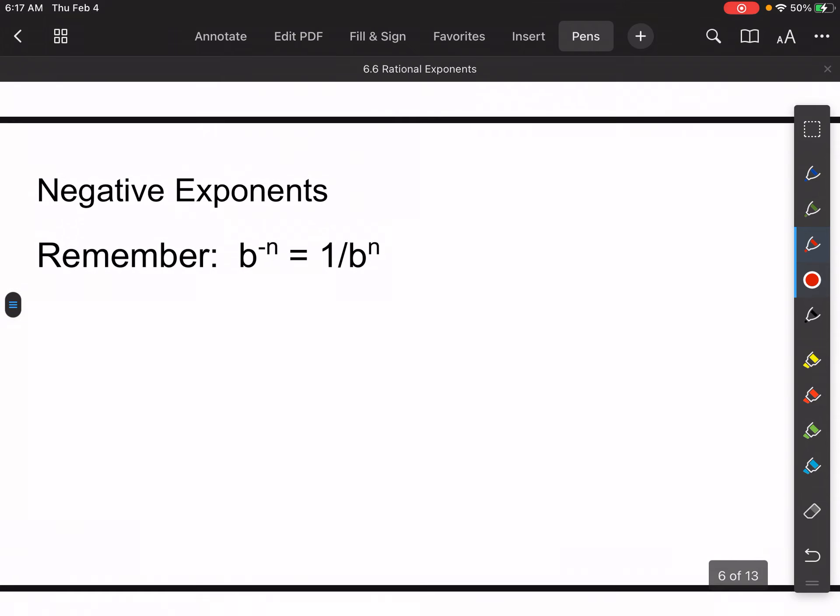So that's example one. For negative exponents here, remember that those just simply mean 1 over that thing, right? So if I have b to the negative n, it's the same thing as 1 over b to the n.